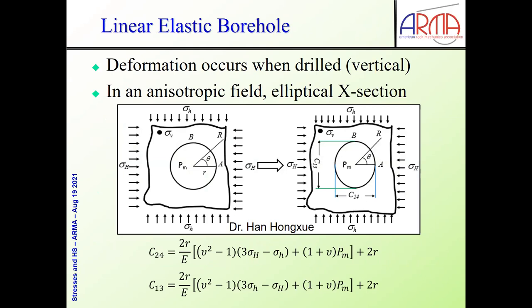The basic physics are shown here. In the simplest linear elastic plane strain case — vertical boreholes subjected to sigma-H-max and sigma-H-min — when we drill, we get a change in the principal diameters B and A, so that C15 is the diameter parallel to the sigma-H direction, and C24 is the diameter parallel to the sigma-H-max direction. In the simplest linear elastic model, you see those equations. Those equations have too many parameters: we have modulus and Poisson's ratio, the mud weight, and R — the borehole diameter. You might say 'I used a nine-inch bit, so the diameter is nine inches.' Not quite.